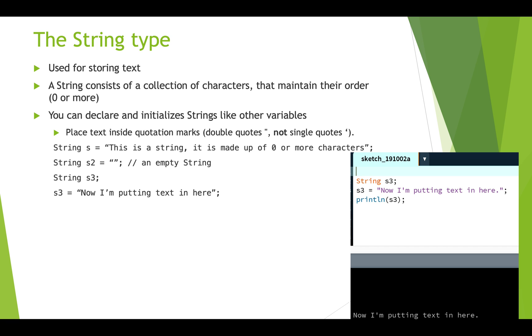So here's some examples. String S, this is a string that is made up of zero or more characters. String S2 is the empty string. And string S3 is a case where we're declaring a string, but not actually initializing it on that first line. And then at a later date, we can actually initialize it by putting text in the string.